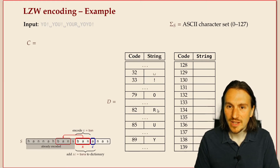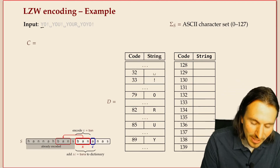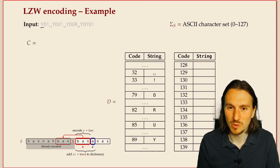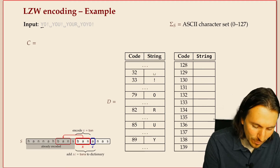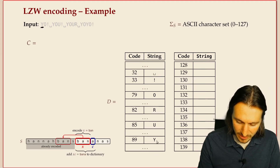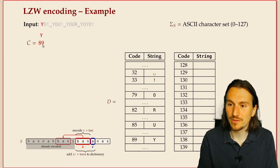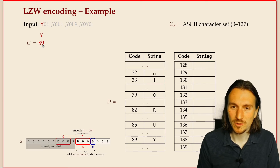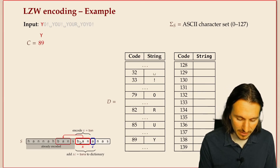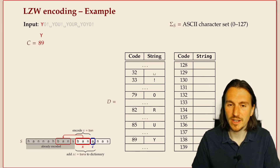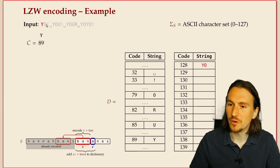We include all ASCII characters because we want a generic compression method that works for any text file. So first, we try to find the longest phrase in our dictionary starting at the beginning of the uncoded part. At the moment we only have single characters, so the longest match is just 'y', which has code 89. We store 89 as our first code word, then move on.